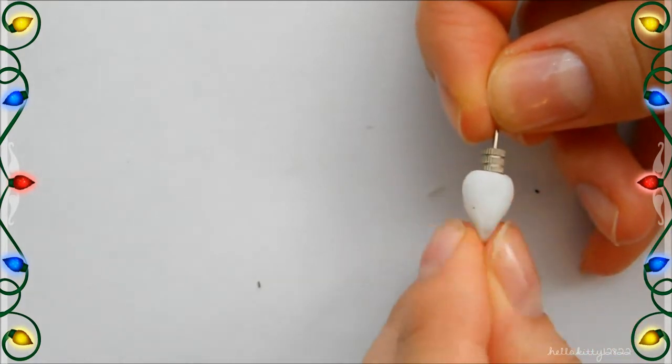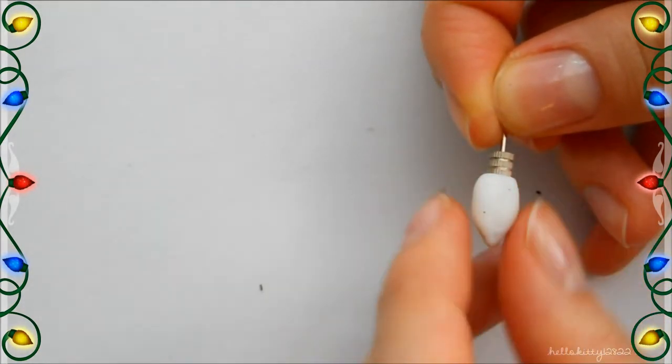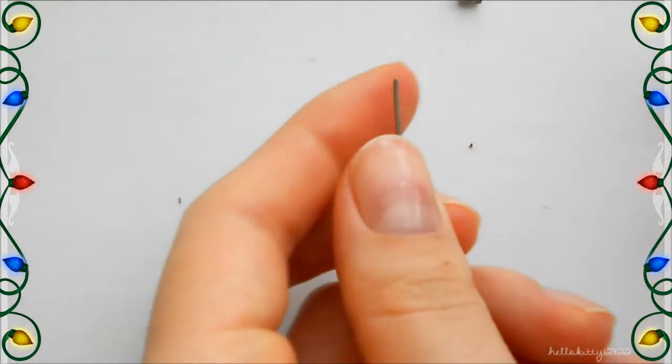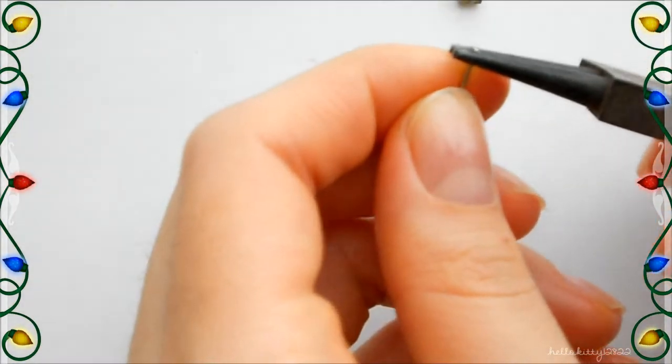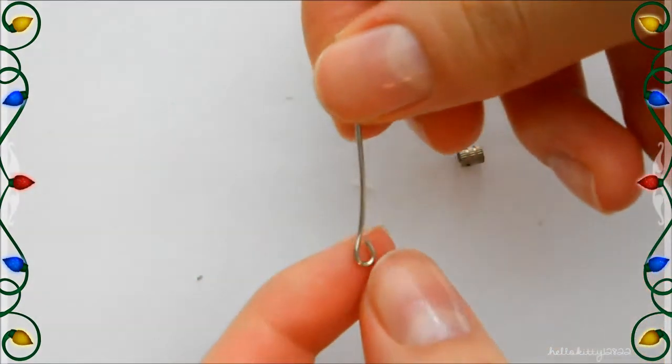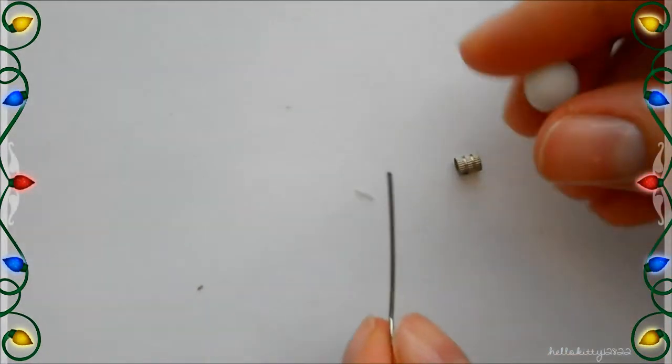So I'm just going to reshape my little light bulb. Now taking the other half of the head pin, I'm going to loop it at the top using my pliers and do the same steps that we did before.